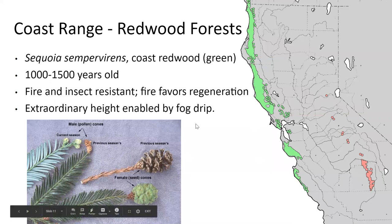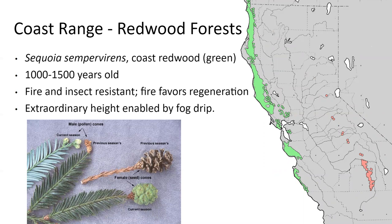Coast redwoods are resilient to fire and insect damage. They grow in a really wet area, so fires are not a big issue — there's a very long fire interval. Fires that do occur favor regeneration — they need cleared forest to regenerate. The fog drip along the coast enables their great height. Beyond a certain height, the tree's vascular tissue can't transport water against gravitational pull, so fog drip is really critical and responsible for these trees reaching their great height.